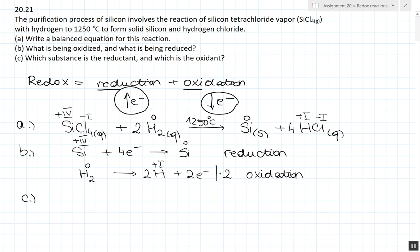By giving electrons and increasing its oxidation number from 0 to plus 1. So now that we have determined which one of the half reactions is the reduction and which one is the oxidation,